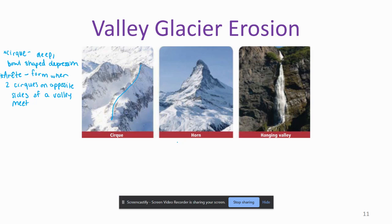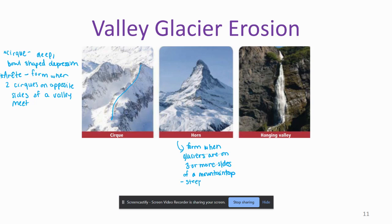Then we have a glacial horn. This forms when there are glaciers on three or more sides of a mountain top. You can tell it is a horn because it will be steep and it is pyramid-shaped.